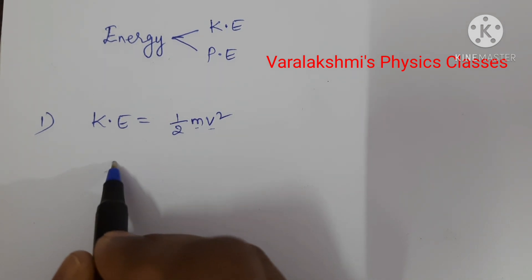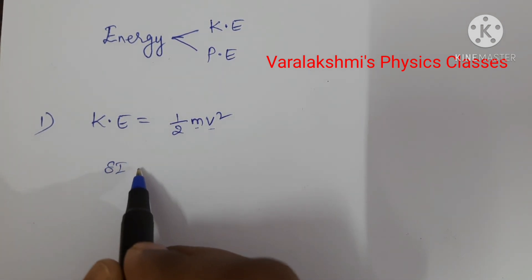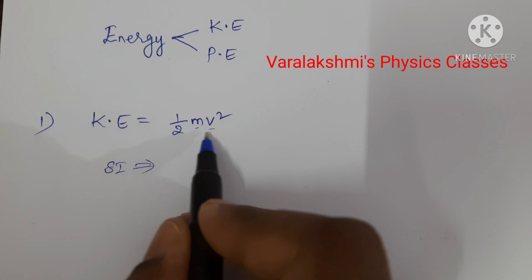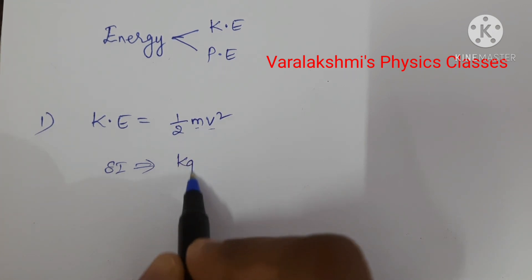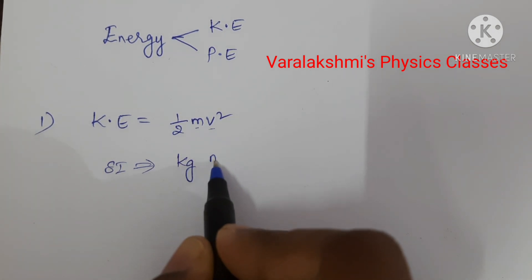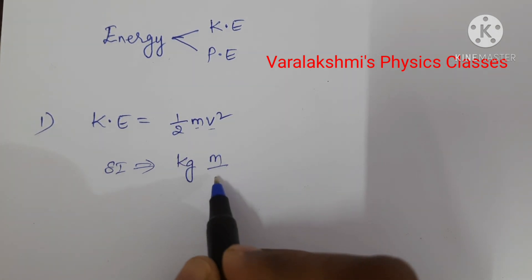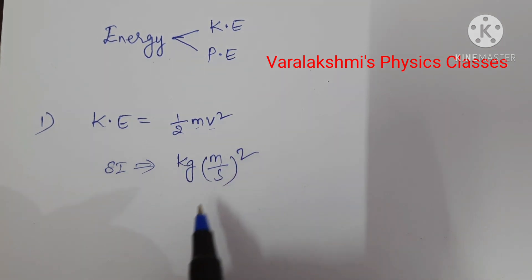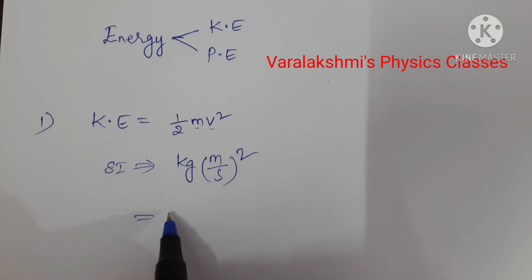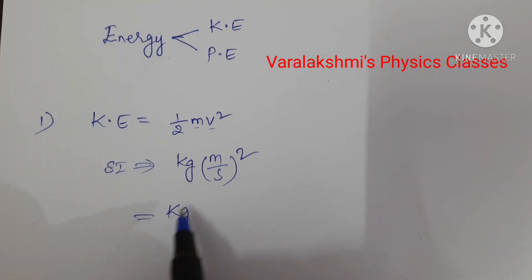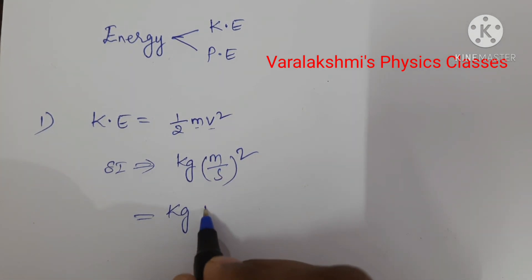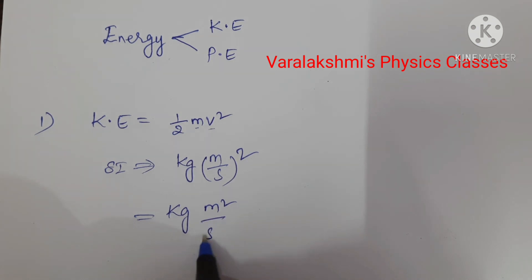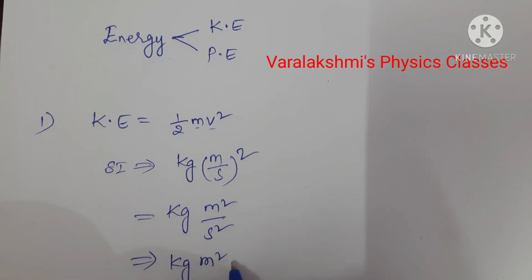Let us write the SI unit for mass and velocity. For mass, kilogram, and for velocity, meter per second — and we are squaring it. So this is equal to kg times meter squared per second squared, which implies kg meter squared and s to the power of minus 2.